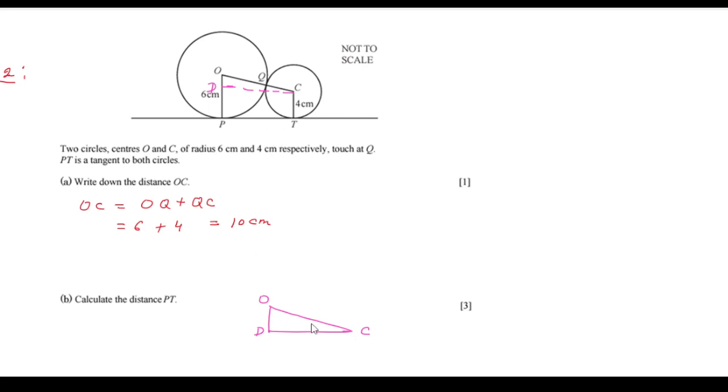Now, this OC, we have already found out it is 10 and OD, if we see, this is going to be 6 minus 4. Because here, PT will be equal to 4, therefore OD will be equal to OP minus PD which is 6 minus 4 equals to 2. So this distance is 2.